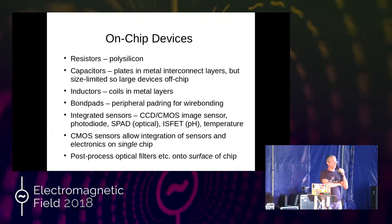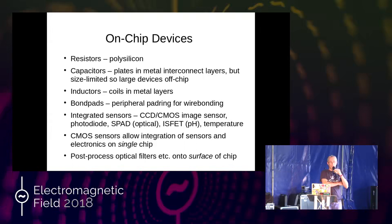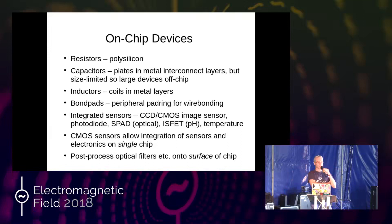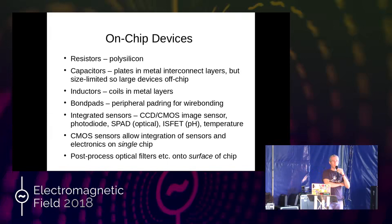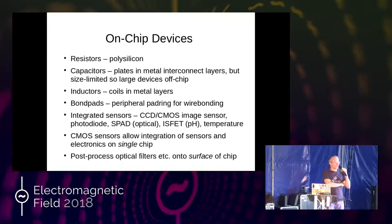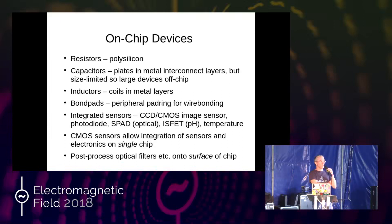On chips you can have resistors fabricated in polysilicon, capacitors using capacitance between two adjacent metal layers, and inductors — tiny coils made of metal. You always have bond pads to bring signals out. You can also have sensors, for example: charge-coupled devices (CCD) or CMOS image sensors for light sensing, photo diodes, SPADs (single-photon avalanche diodes) for very low light levels, and sensors for pH. Putting sensors on CMOS means you can put the sensor and processing electronics on the same chip.